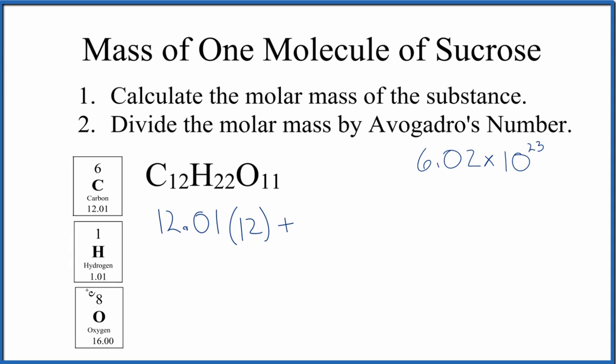Plus we have hydrogen, 1.01 grams per mole. We have 22 of those. And then we add the oxygen, 16.00 grams per mole, and we have 11 oxygens. So what we do is multiply each thing, and then we add it all up, and we get 342.34 grams per mole. So that's the molar mass for sucrose.